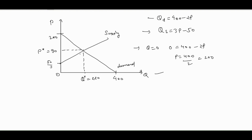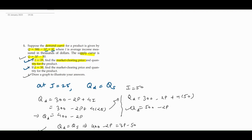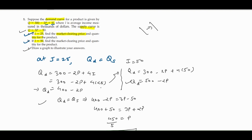That drawing covers part a. For part b, you draw the new demand curve using the equation found earlier. Since income increased from 25 to 50, we can expect the demand curve to shift to the right. I hope this helps you understand how to find the market clearing price and draw the demand curve. If you have any doubts, comment below. Thank you.